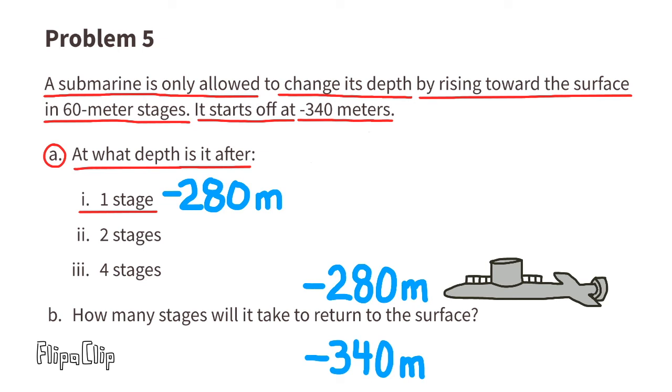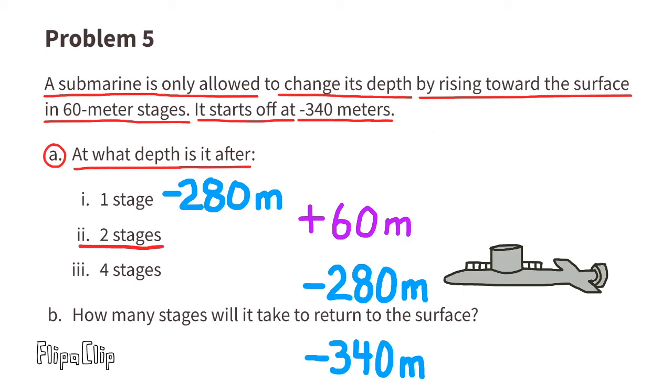At what depth is it after two stages? Now we need to rise up another 60 meters for its second stage. Negative 280 plus 60, that equals negative 220 meters, or 220 meters below the surface of the ocean.